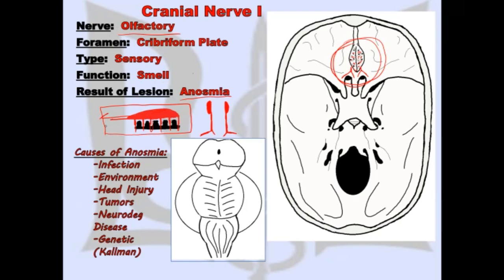The olfactory bulb then courses backward into the skull. As we can see in this diagram, which represents the midbrain, the pons, and the medulla, the olfactory nerve fibers and bulbs arise superior and anterior to the midbrain, pons, and medulla. So the olfactory nerve does not actually arise from the brain stem.